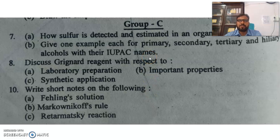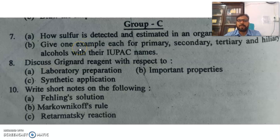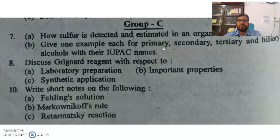Now, Group C. How is sulphur detected and estimated in an organic compound? Estimated means quantitatively — how you report how much sulphur is present in a particular sample. Give one example each for primary, secondary, and tertiary alcohols along with their IUPAC names. You have to write the structure and the IUPAC name.